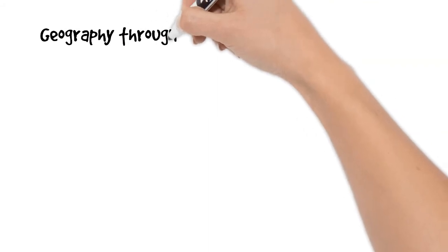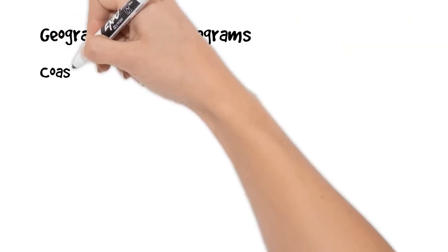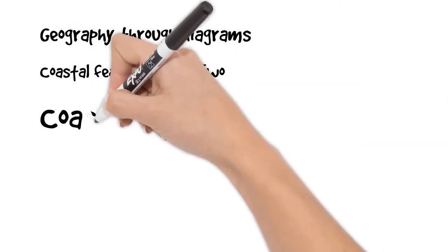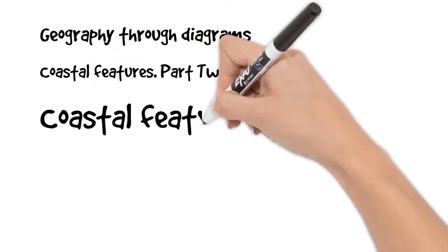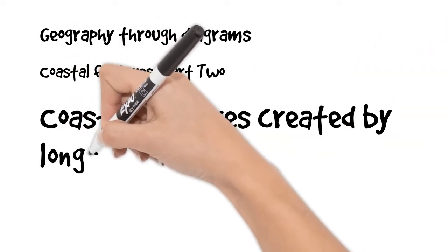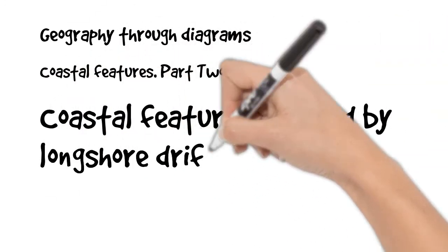This video is part of the Geography through Diagram series and this one looks at coastal features. We're looking at the features on the coast that are caused or created by longshore drift and deposition.